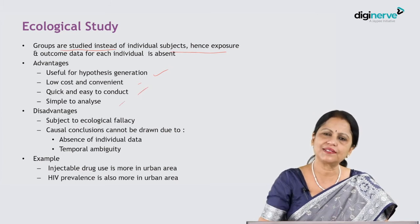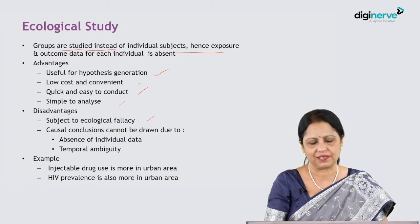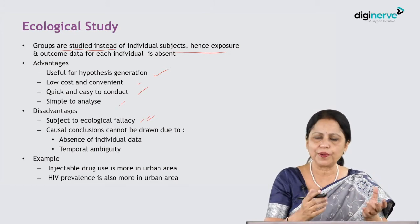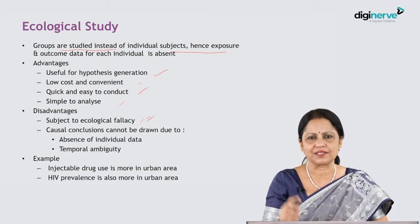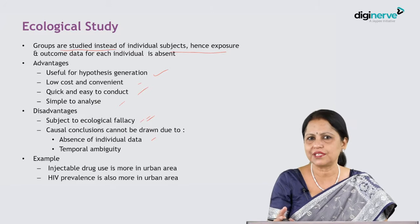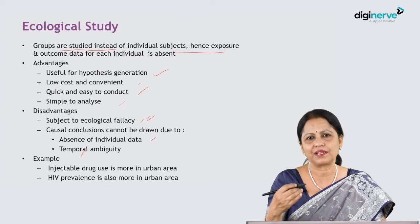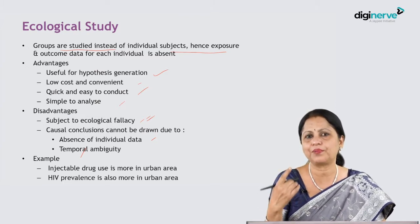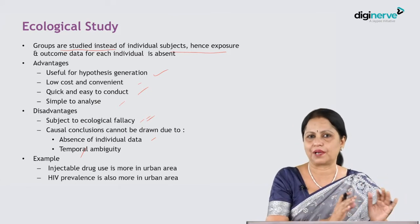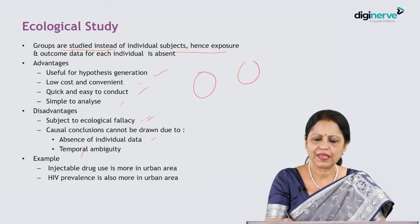The disadvantage of ecological study is ecological fallacy — the error that occurs because we are trying to associate group-level exposure with a disease. Causal association cannot be established because there is no individual data and no temporal association. Temporal association — one of the key criteria for causal association — means the suspected risk factor must precede the outcome or disease, which cannot be determined from this study.